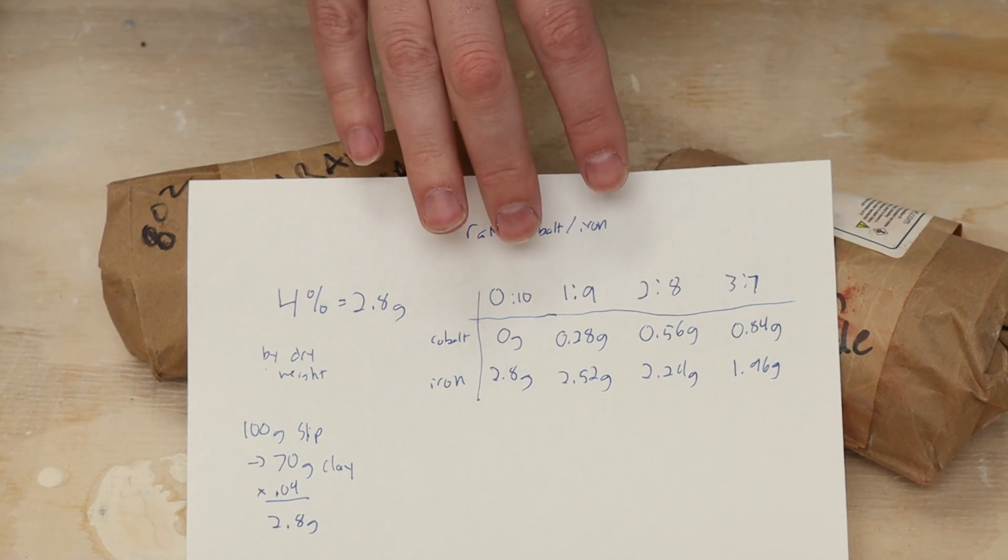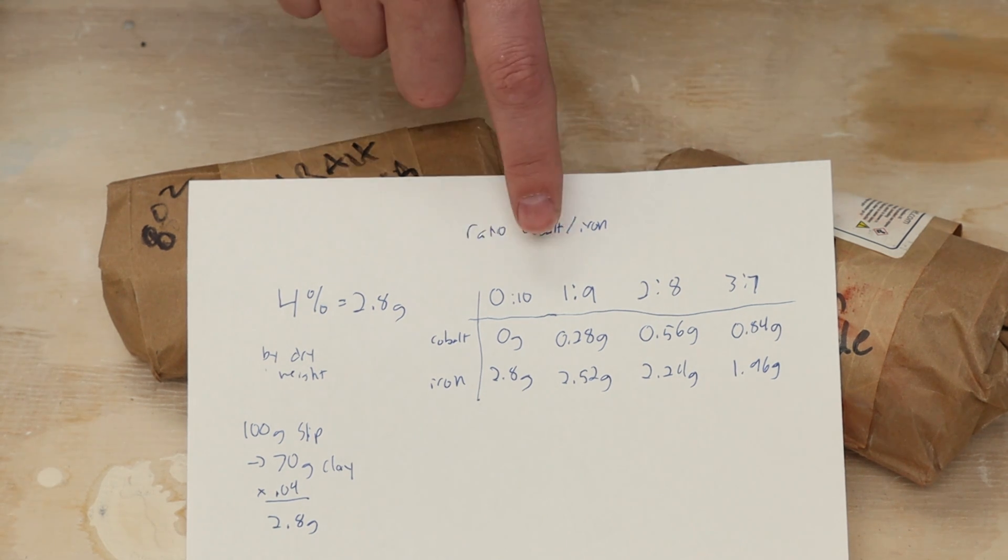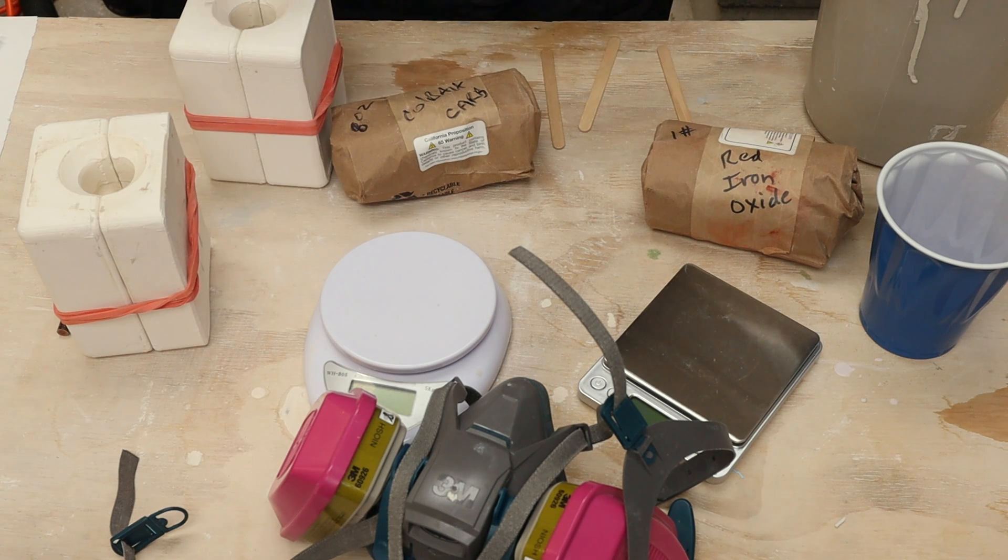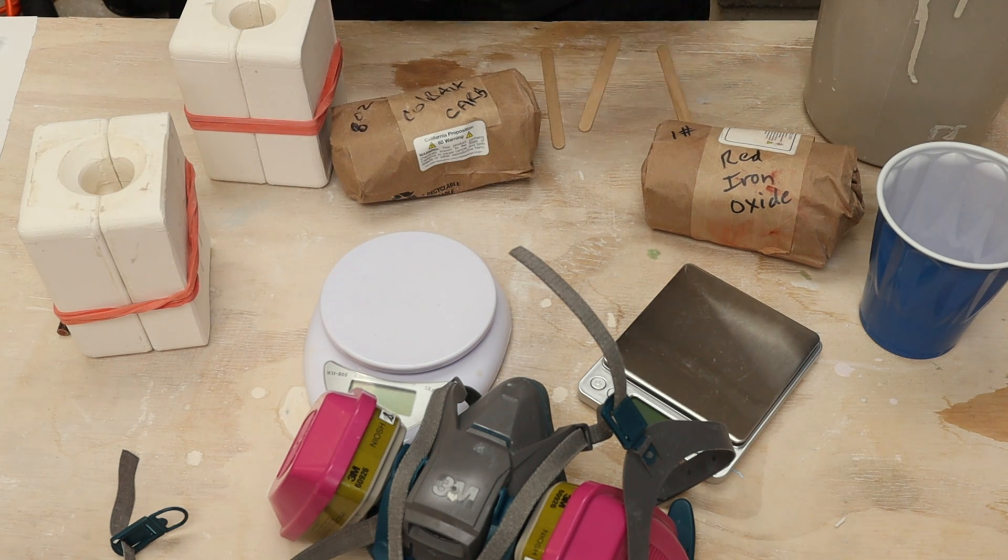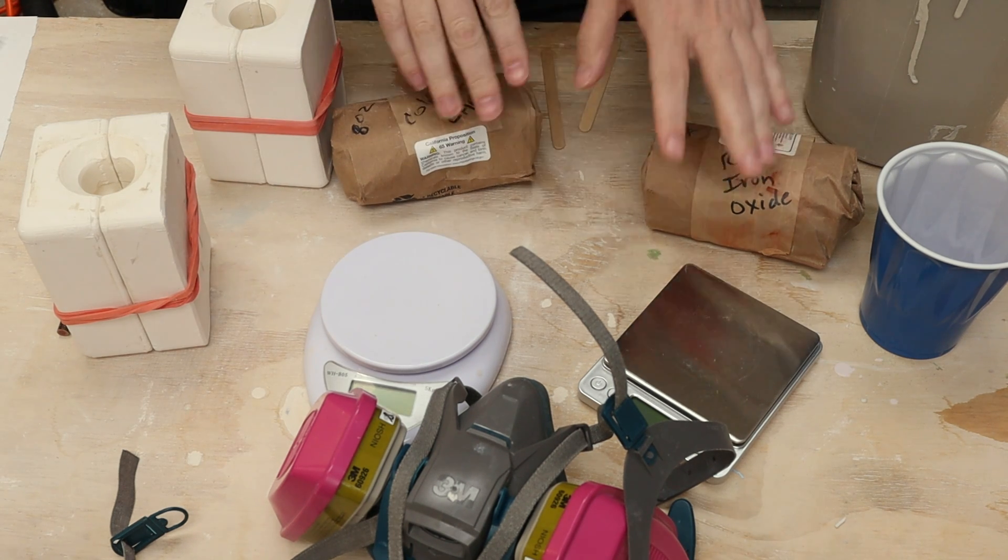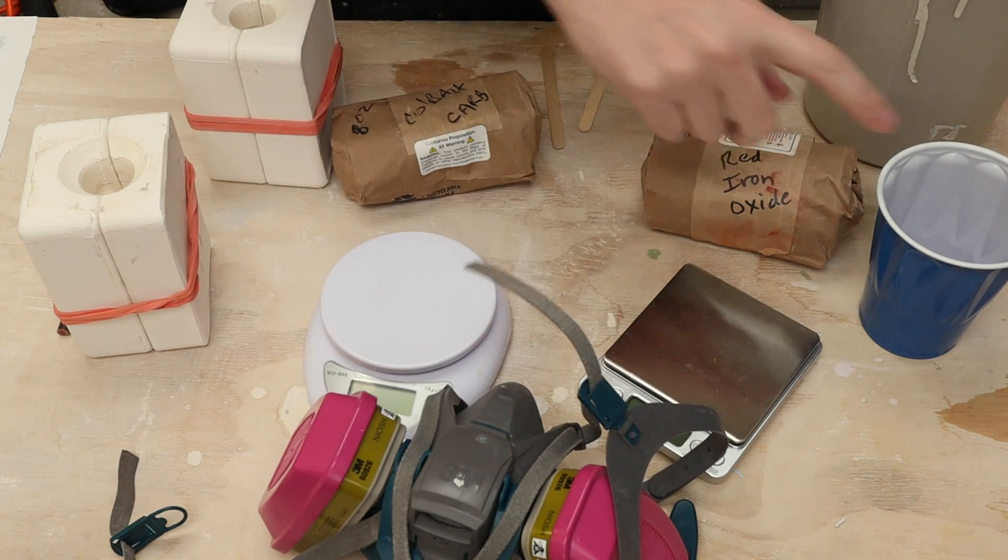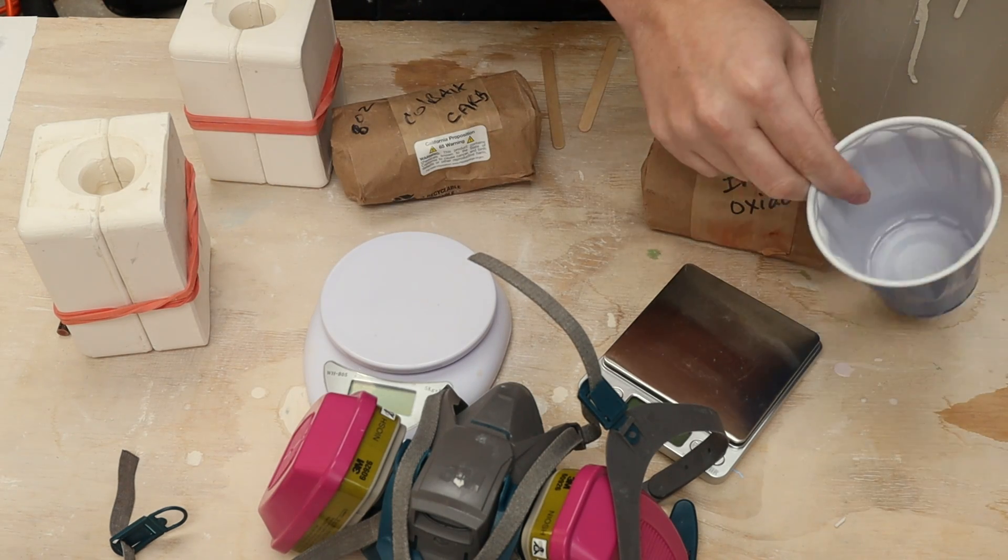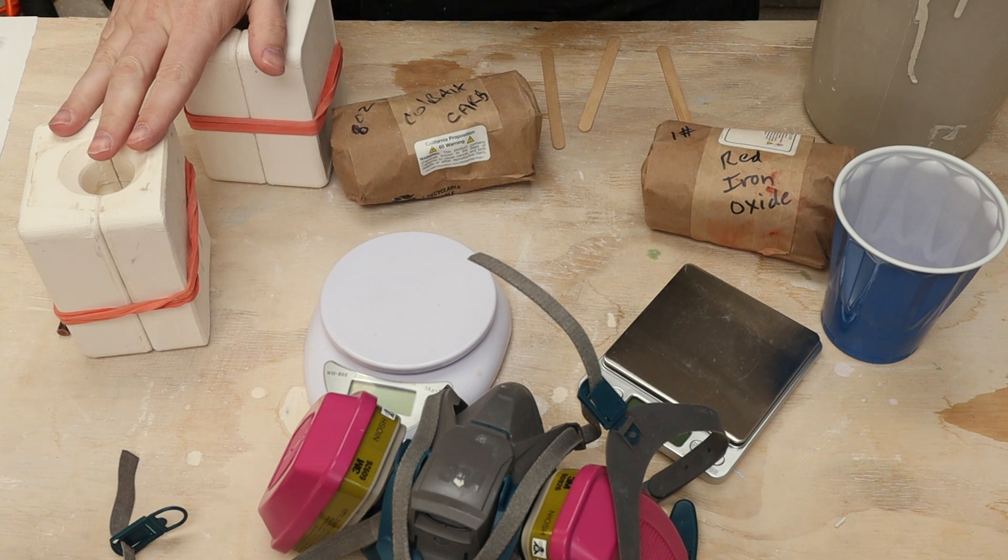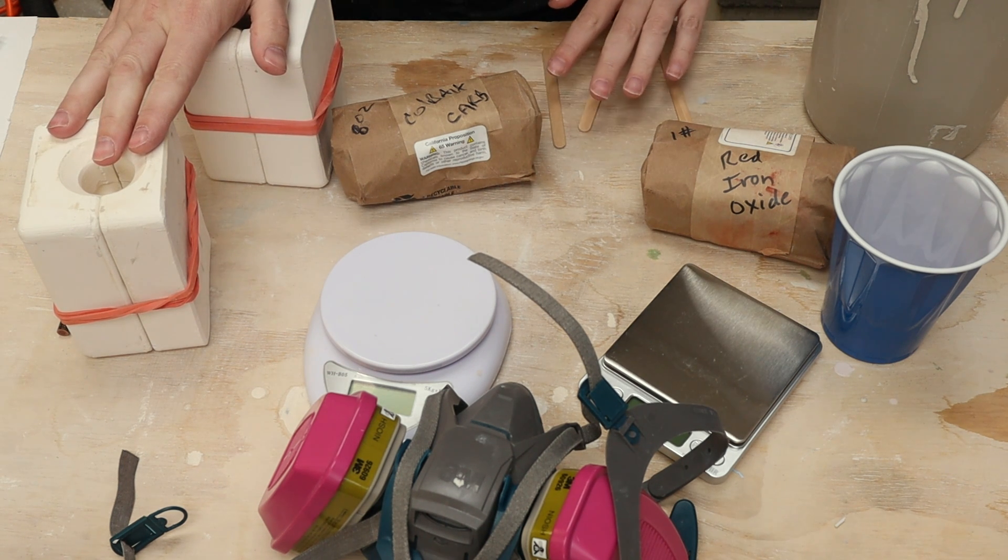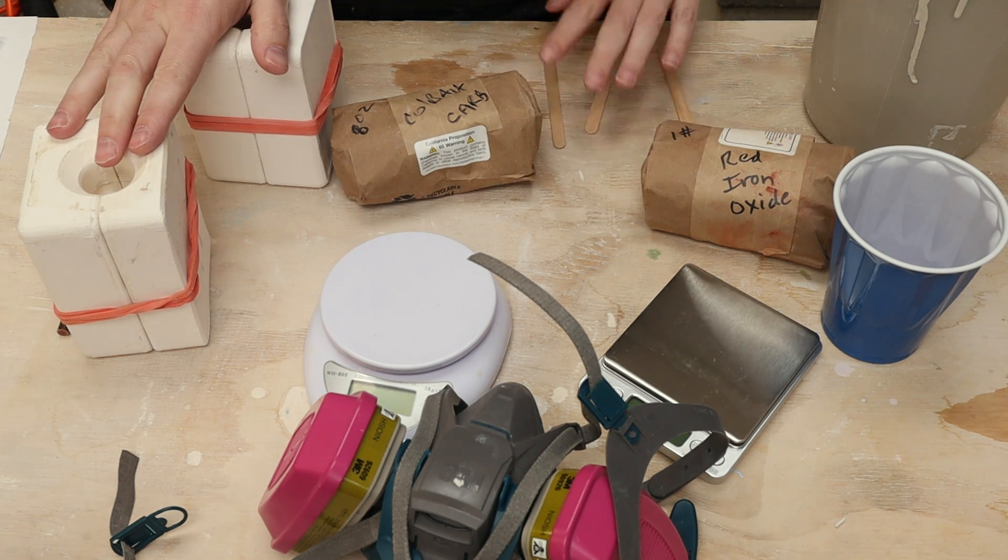In my previous test with speckles I just continually added the amounts of my materials, but since I'm actually changing the ratios I'm going to do these one by one. I think I've got everything set out. I have my two ingredients, my high precision scale and my low precision scale, I have my mask, an empty solo cup to mix the slip in, my test tile molds, and a couple of stir sticks to measure out my ingredients and to stir up the result.